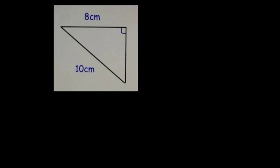So here we've got a Pythagoras question. I know it's a Pythagoras question because I've got two sides and I've got to find another side, X. And it's a right angle triangle.